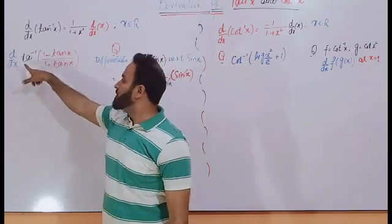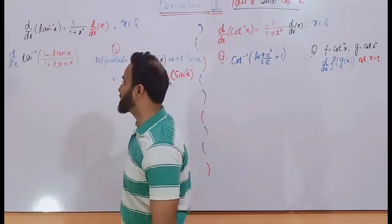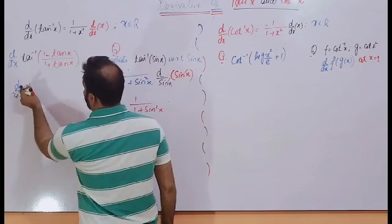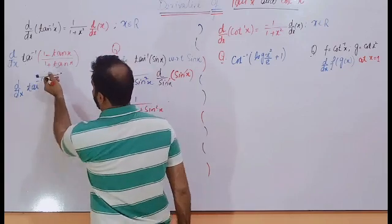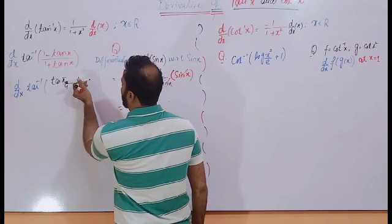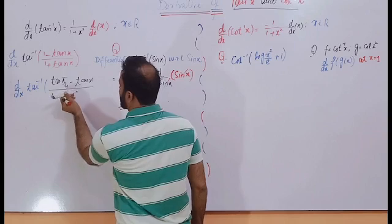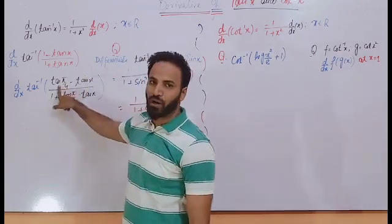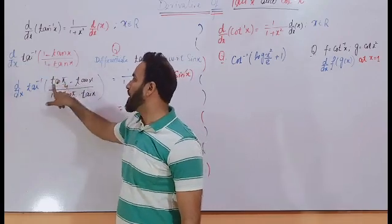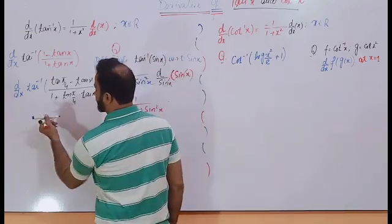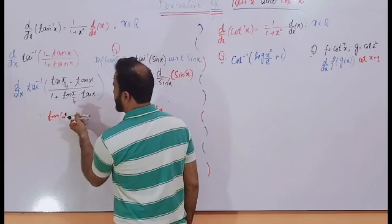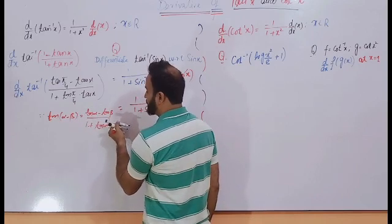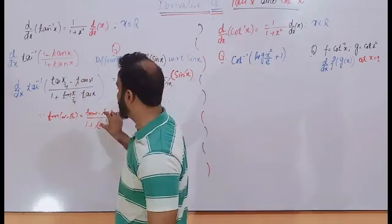Now differentiate this expression. We will start with tan inverse x and the variable is x — d over dx. I try to simplify this expression. It can be written as tan(π/4) minus tan x divided by 1 plus tan(π/4) into tan x. Students, tan(π/4) is equal to 1, so I can replace 1 by tan(π/4). Using this formula: tan(α − β) equals tan α minus tan β divided by 1 plus tan α · tan β.